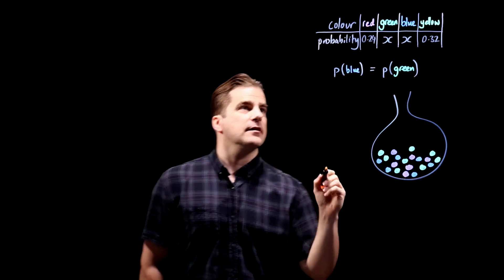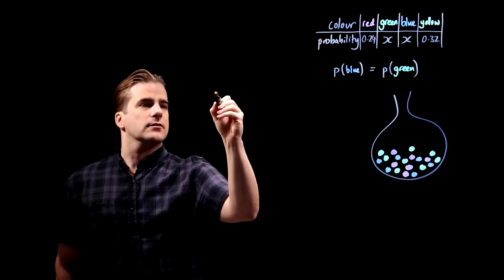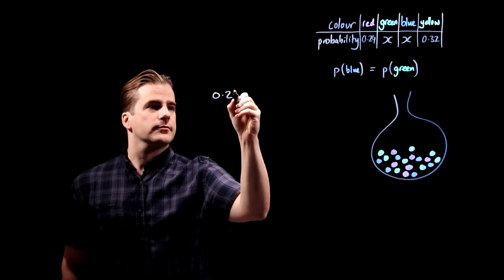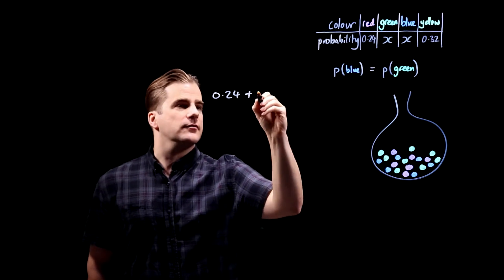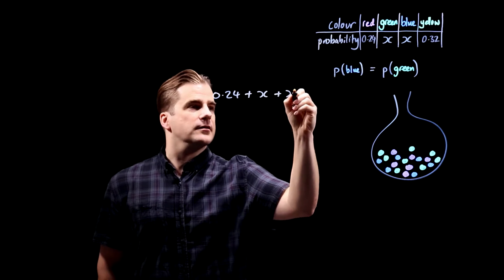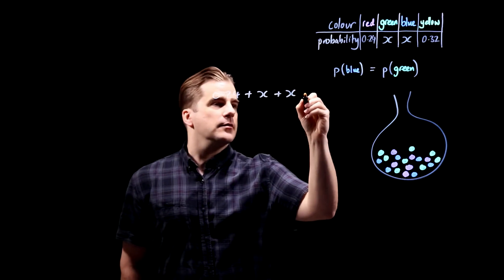That means that 0.24, probability of choosing a red plus the probability of choosing a green plus the probability of choosing a blue plus the probability of choosing a yellow is 1